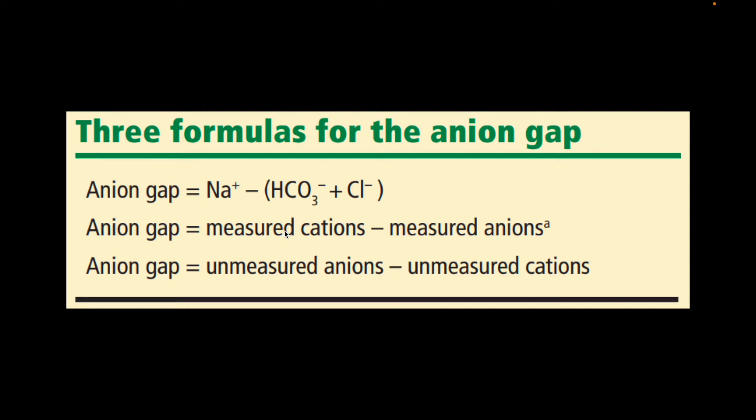Theoretically, the anion gap can be expressed as the measured cations minus the measured anions, or equivalently as the unmeasured anions minus the unmeasured cations.